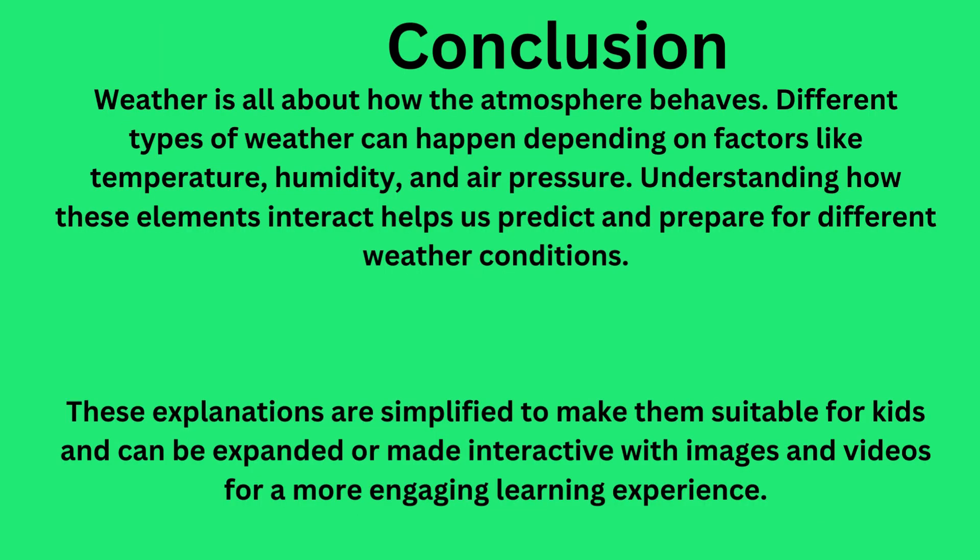Weather is all about how the atmosphere behaves. Different types of weather can happen depending on factors like temperature, humidity, and air pressure. Understanding how these elements interact helps us predict and prepare for different weather conditions. These explanations are simplified to make them suitable for kids and can be expanded or made interactive with images and videos for a more engaging learning experience.